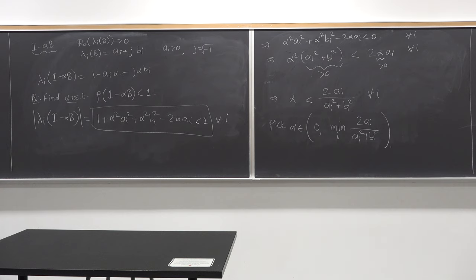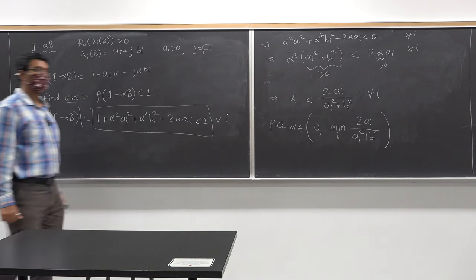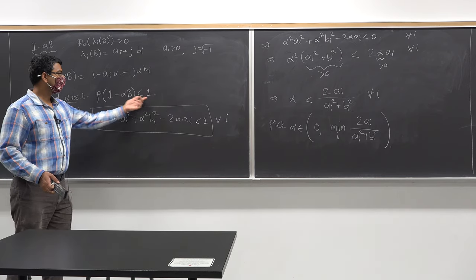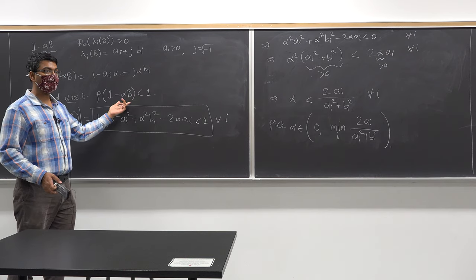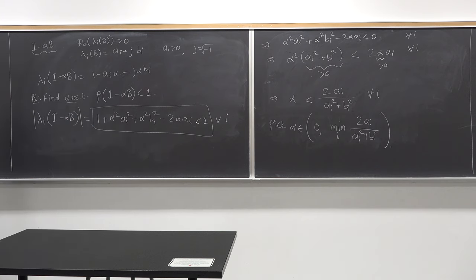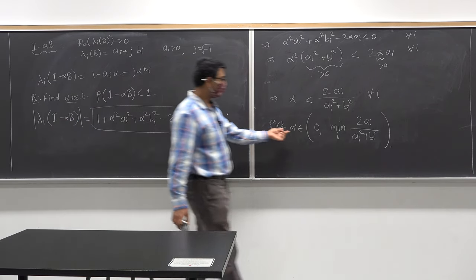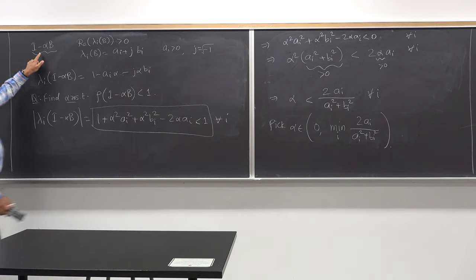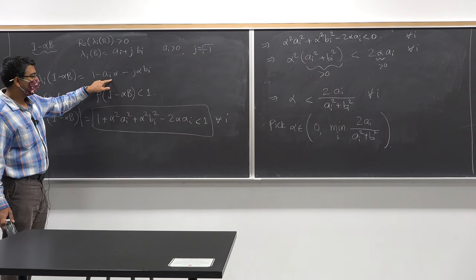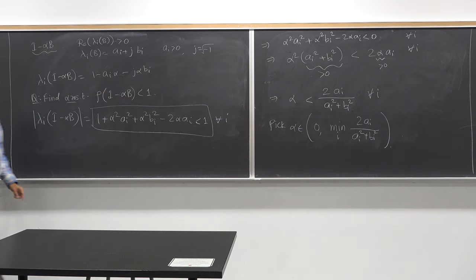Any questions? The spectral radius cannot be less than zero because it's the absolute value of an eigenvalue — it can only be zero or greater than zero. So what we have done: since I can pick a step size alpha in this range, this implies that rho of I minus alpha B is less than one, which implies the Lagrangian method converges to a point satisfying first-order necessary conditions for optimality.